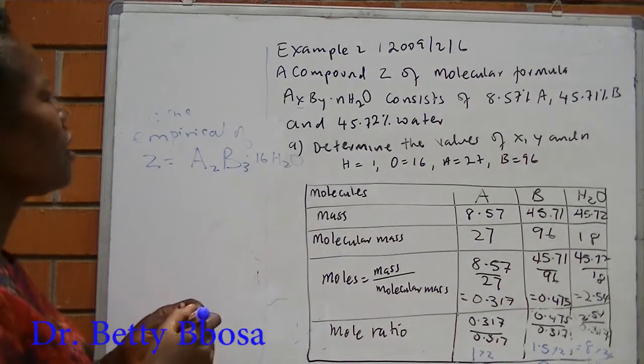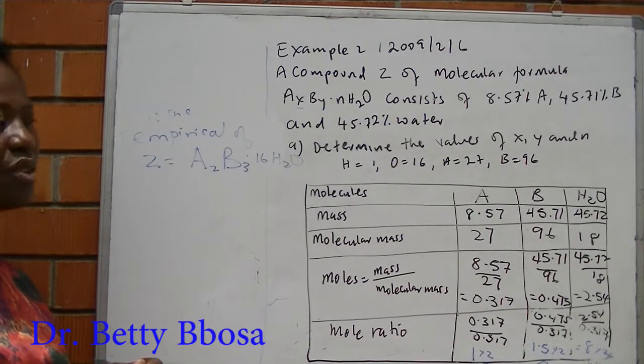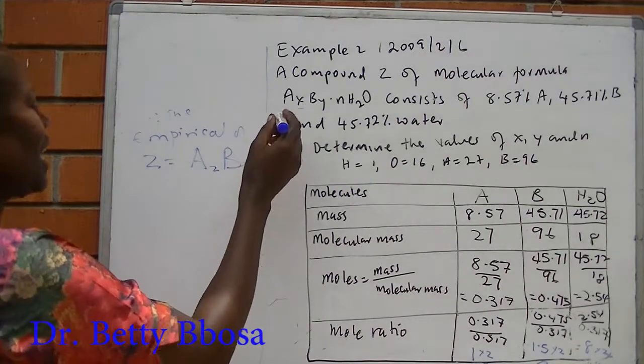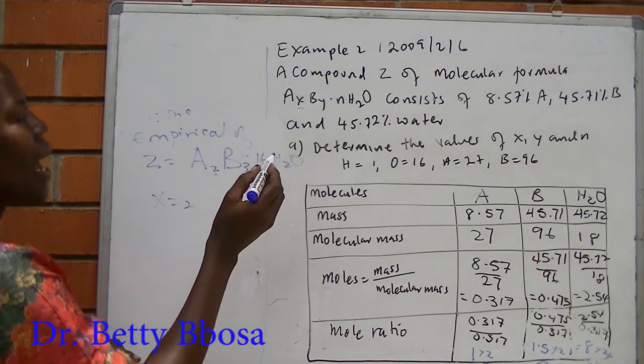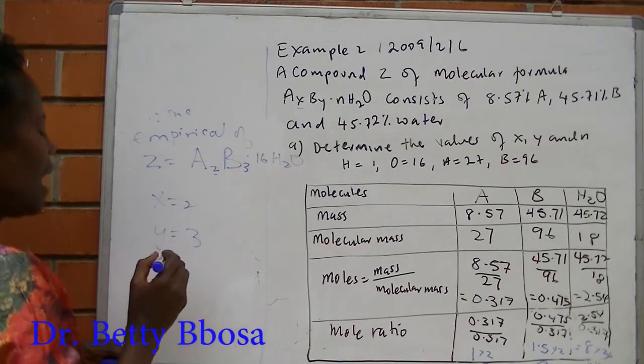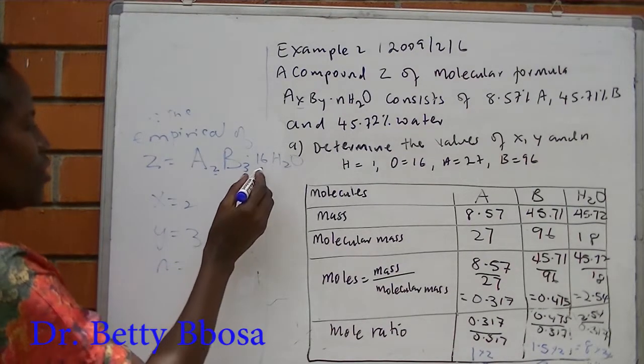When we come to the formula, we are told to calculate the value of X, Y, and N. X has got a value of 2, Y has got a value of 3, and N has got a value of 16.